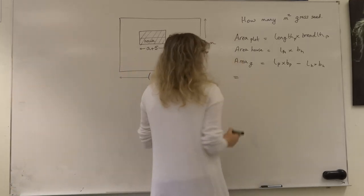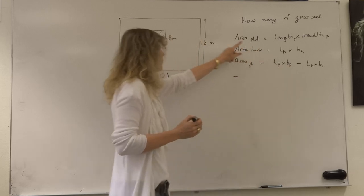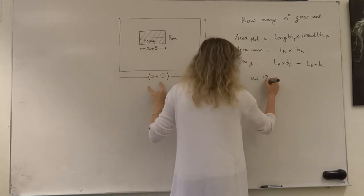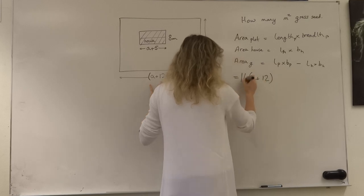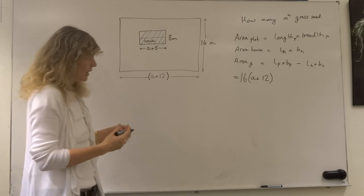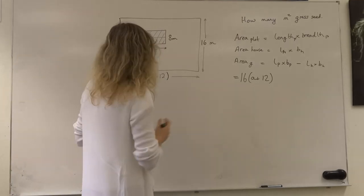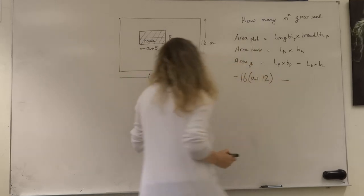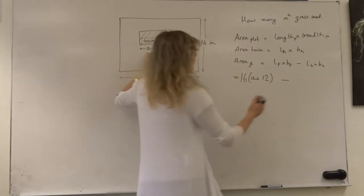So what we need to do here then is first get the length times the breadth of the plot. We know that the length is a plus 12, and we know that the breadth is 16. So we've got 16 lots of a plus 12, which is the area of our plot in square meters, minus the area of the house, which is 8 multiplied by a plus 5.